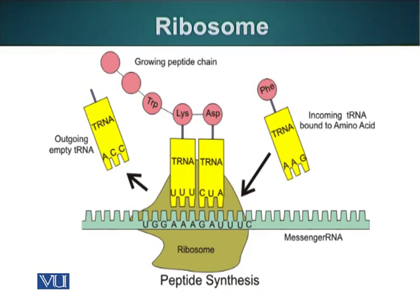Ribosomes basically catalyze the reaction in which two amino acids are linked together via a peptide bond. This bond formation is catalyzed by an RNA molecule present in the large subunit of the ribosome — it is not the protein which is catalyzing this reaction. So the enzymatic activity of the ribosome is due to an RNA molecule.